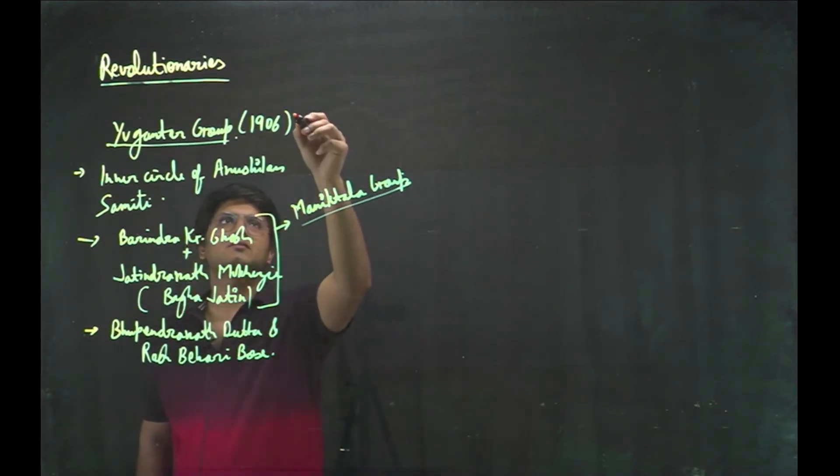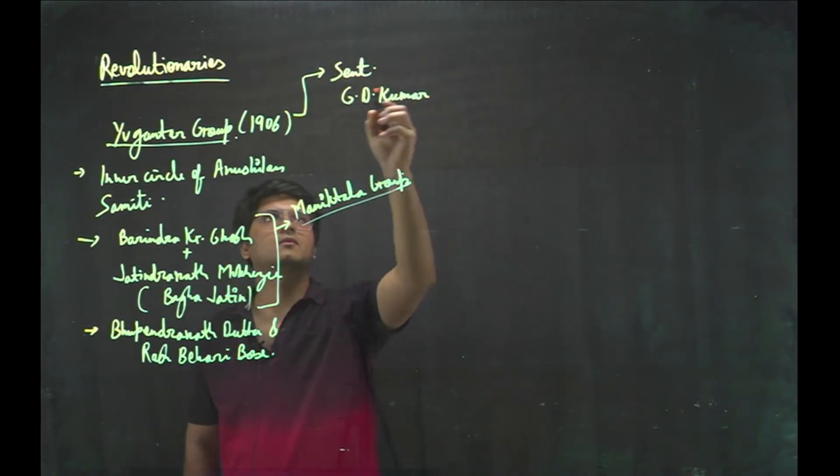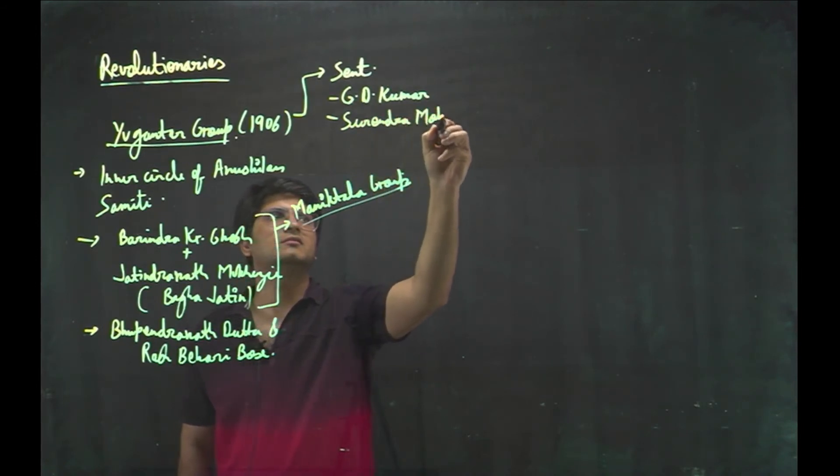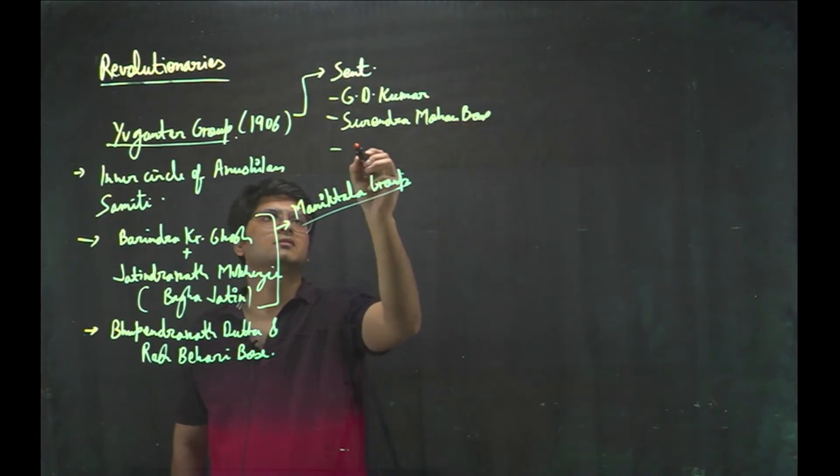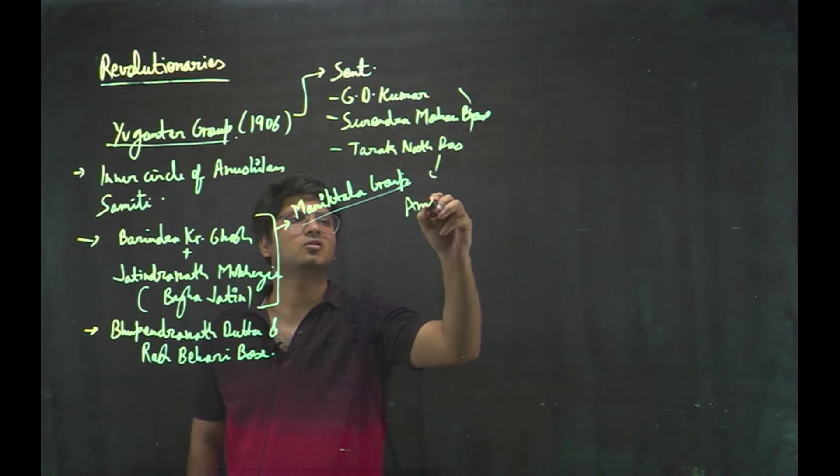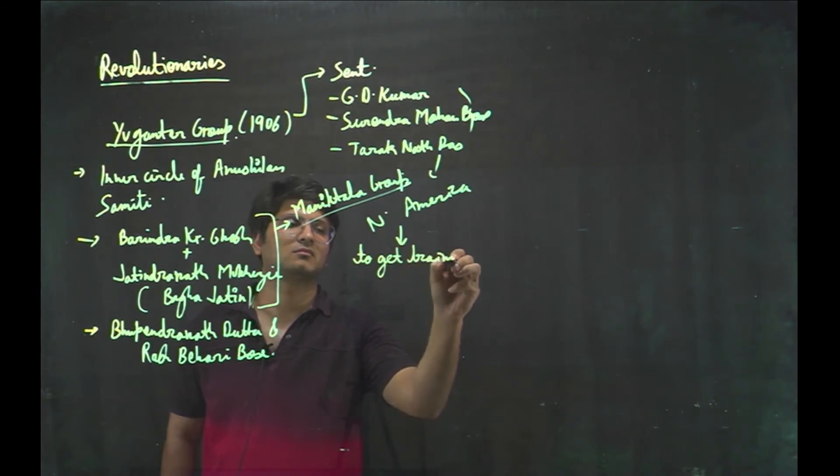This Yuga Antar group sent GD Kumar, Surendra Mohan Bose, Tarik Nath Das to America, North America, to get training. These people became the nucleus of Gadhar.